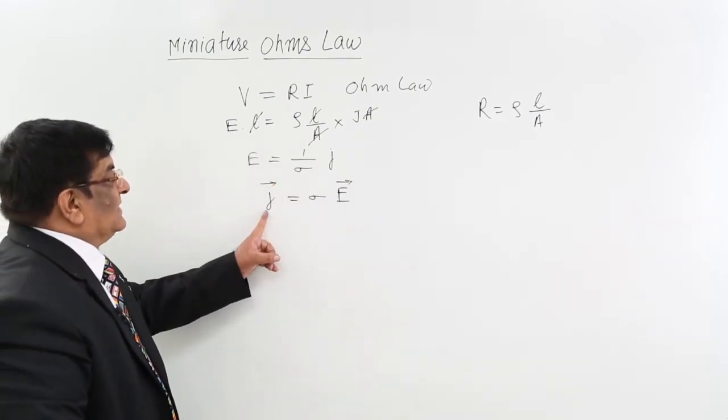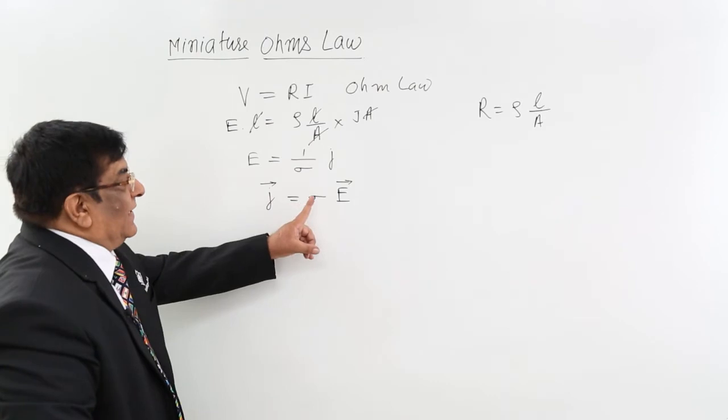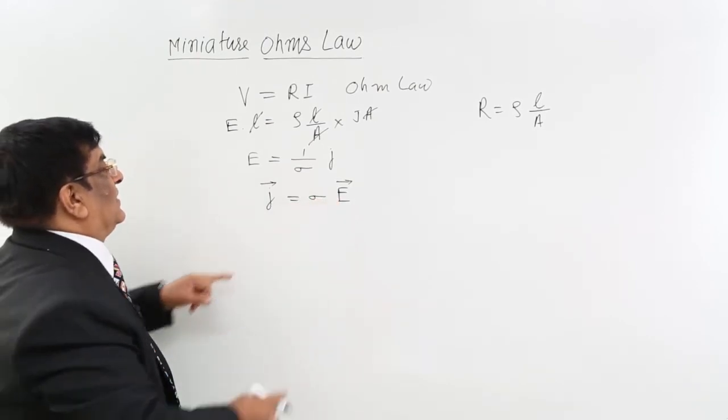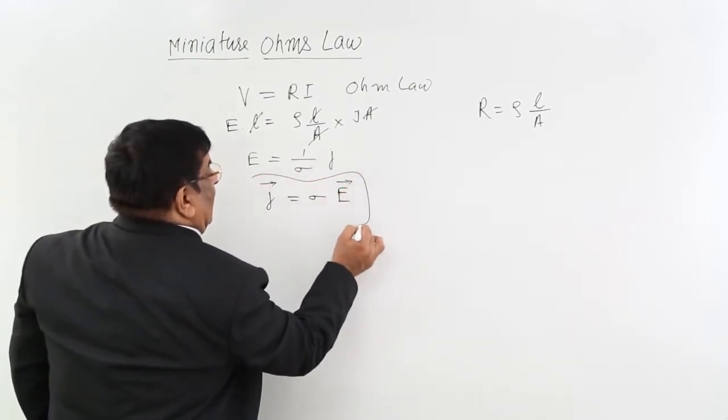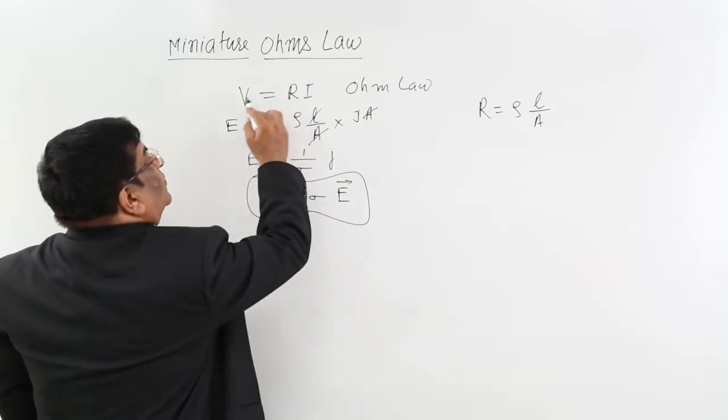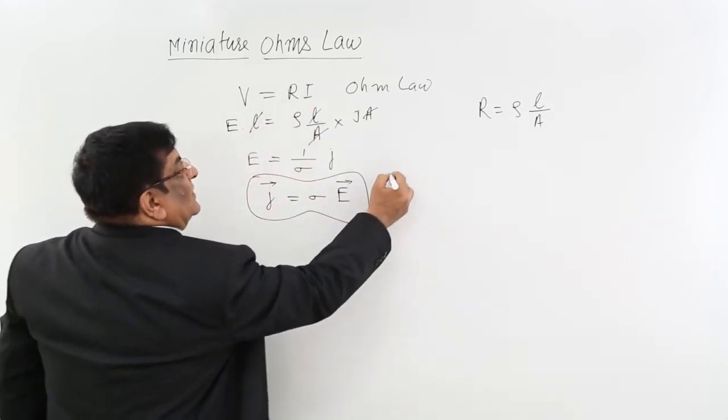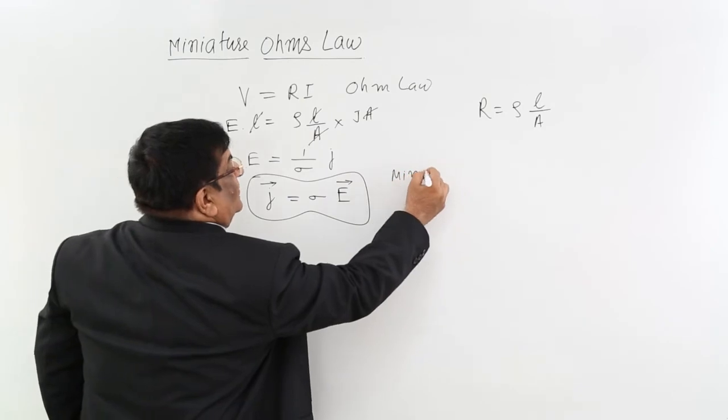Current density vector, conductivity, and electric field—these three are related. And this we have got from Ohm's law. So this is known as miniature form of Ohm's law.